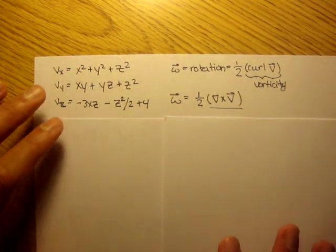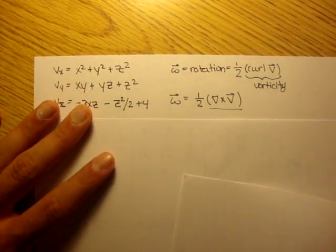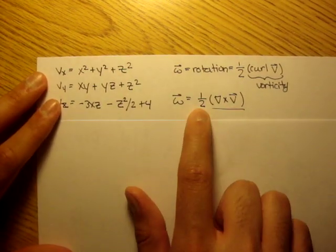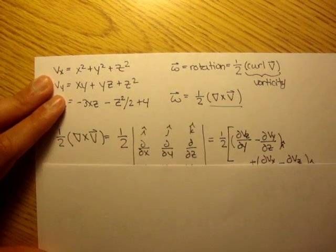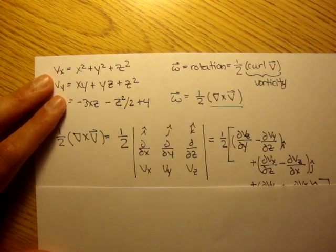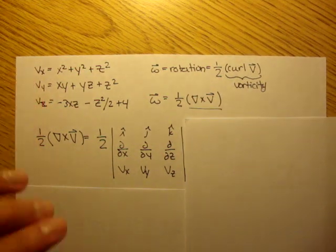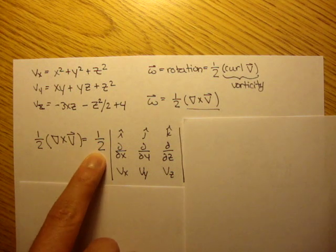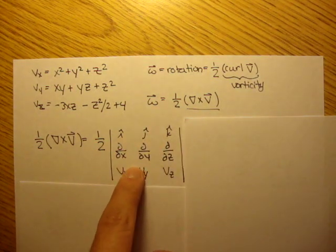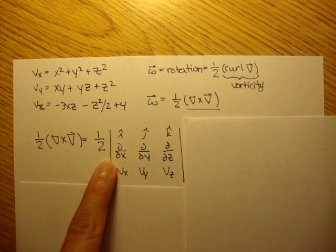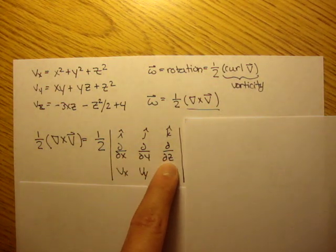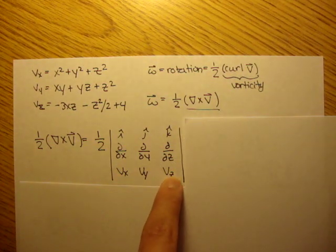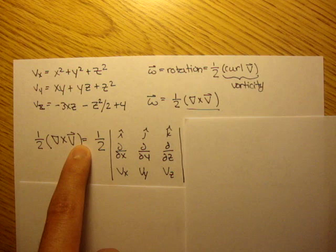So, we see here, this is going to be a cross product, so one half of del cross v. Okay, and I rewrote it, let me just cover that up for now. I wrote it here, one half of del cross v is one half of the determinant of this. So we have our i, j, k unit vectors, we have the partials, which is our del vector, and we have the components of the velocity field. So we have del cross v.